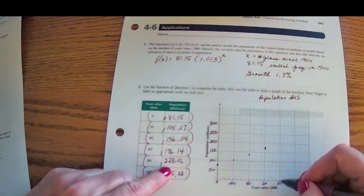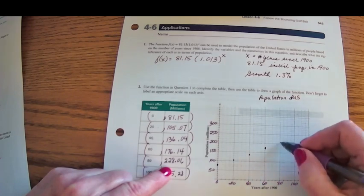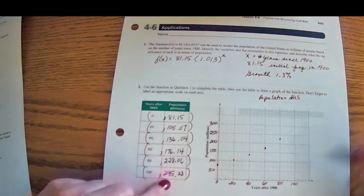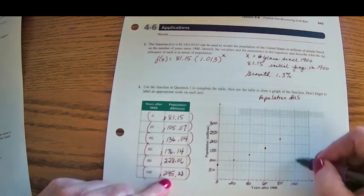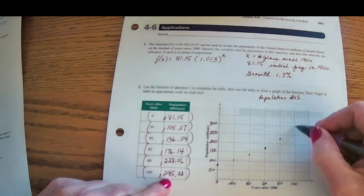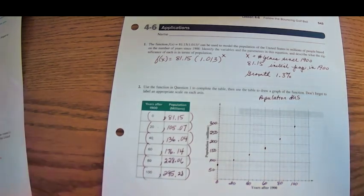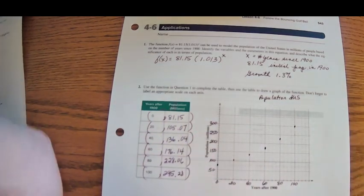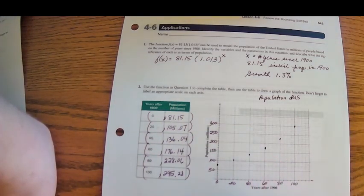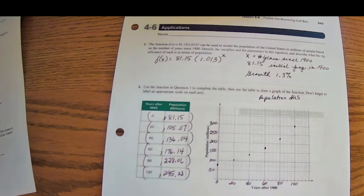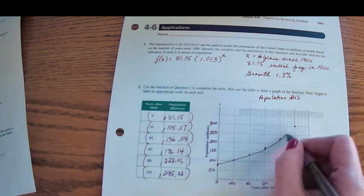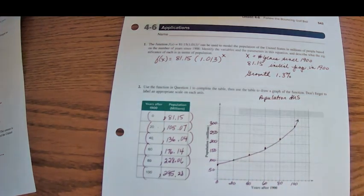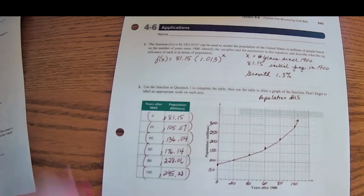When x is 80, y is almost 230. So here's 210, 220, 230. And 100 years, we're up to almost 300. All right, so we have our table and we have our data values. And if we want to kind of connect them, we can see that this is a curve that increases. That's what an exponential growth curve can look like.